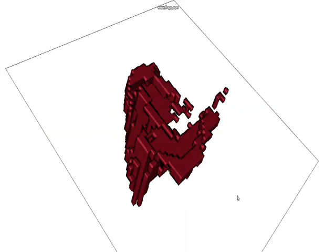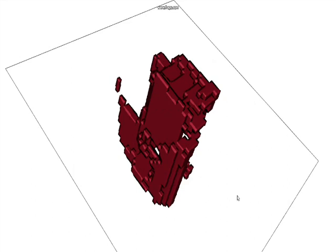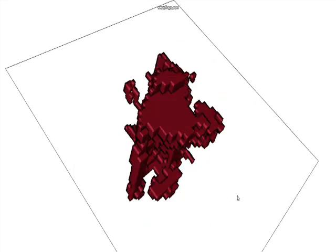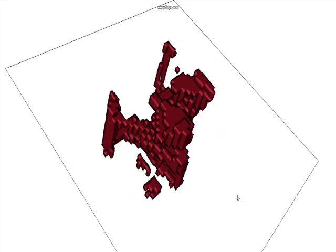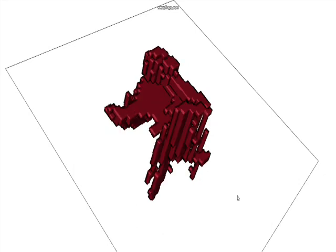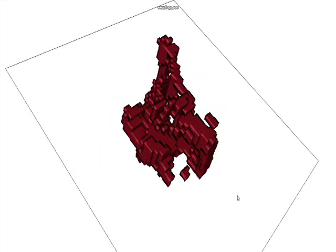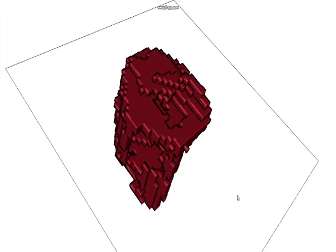This is evident when performing class-unconditional random object generation by sampling randomly in the latent space. Though the random objects don't appear to belong to any particular class, they display connected structure and mostly do not produce any free-floating voxels.